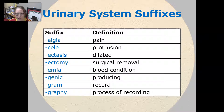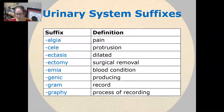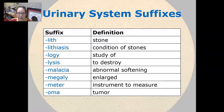Algia is pain. Cele is protrusion. Ectasis is dilated. Ectomy is surgical removal. Emia is a blood condition. Genic is producing. Gram is record and graphi is the process of recording. Lith is a stone and lithiasis is a condition of stones. Logy is the study of.